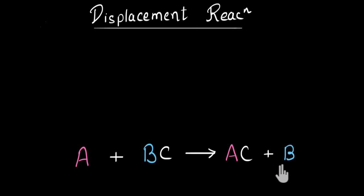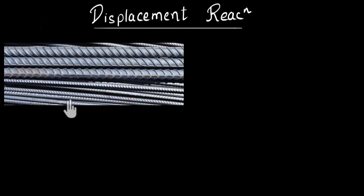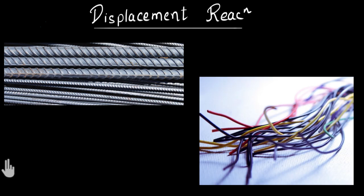You might be wondering, why are we even talking about this? What's the use of this reaction? In our daily lives, we depend a lot on pure elements. The houses we live in stand on strong pillars made of pure iron. The electricity in our houses is transmitted using connecting wires made of copper. These pure elements help us sustain the kind of life that we have. But the question is, how do we get these pure elements?